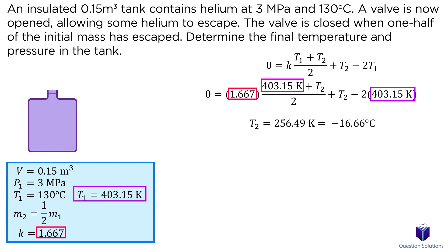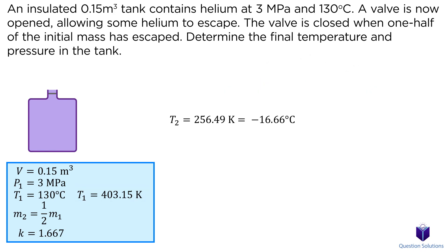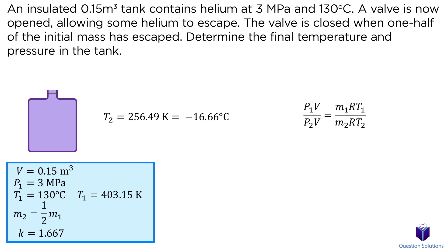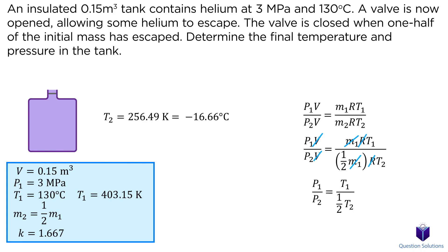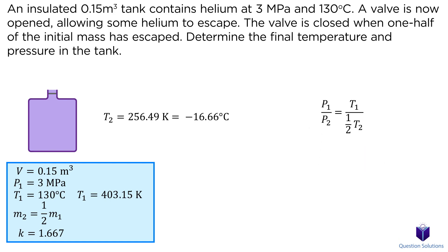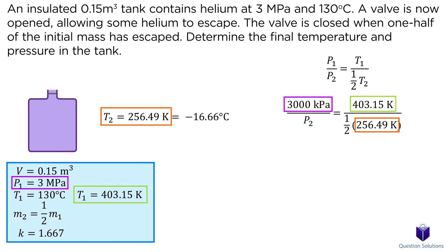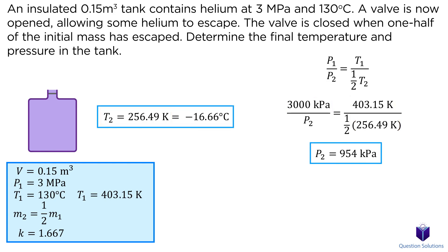Lastly, we need to figure out the final pressure. We can do that using the ideal gas equation by comparing the initial state to the final state as a ratio, representing mass 2 in terms of mass 1 and eliminating common variables. Solving tells us that the final pressure was 954 kPa.